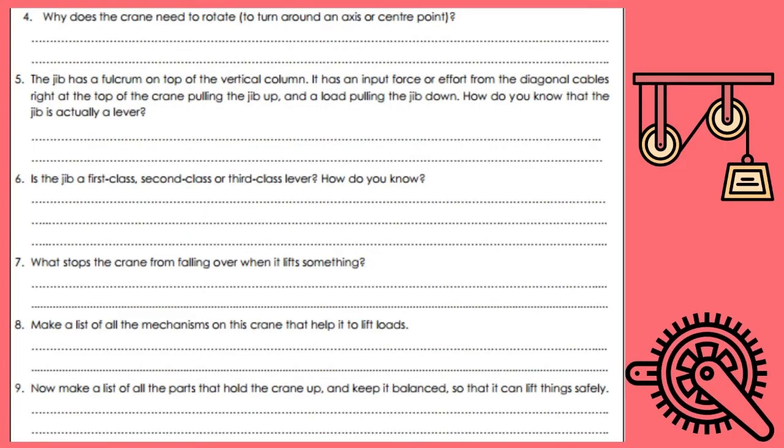4. Why does the crane need to rotate? To turn around an axis or center point. 5. The jib has a fulcrum on top of the vertical column. It has an input force or effort from the diagonal cables right at the top of the crane pulling the jib up and a load pulling the jib down. How do you know that the jib is actually a lever?